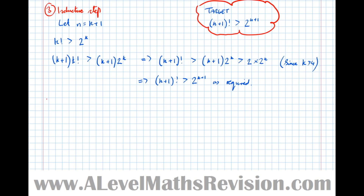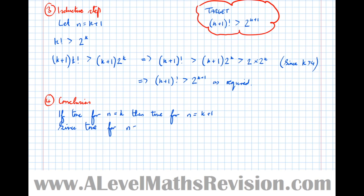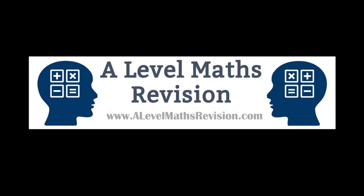Finally, the conclusion: if true for n equals k, then true for n equals k plus 1. Since true for n equals 4, then true for all integers n greater than or equal to 4. It's quite a confusing topic, but if you invest the time to get your head around it, it's worth it — because if this comes up in an exam, it's a goldmine in terms of marks. For more videos like this, subscribe to our YouTube channel, and to find out more about Skype tuition and revision courses, go to alevelmathsrevision.com.